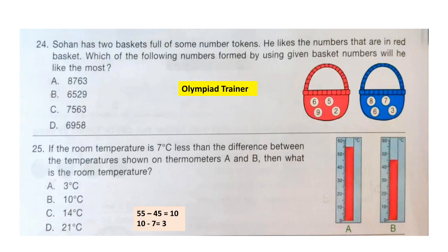Question 24: Sohan has two baskets full of some number tokens. He likes the numbers that are in the red basket. Which of the following numbers formed by using the given basket numbers will he like the most? It is said that Sohan likes red basket numbers, that is 6592. Among the options, option B is 6529, and all four digits are present in the red basket. So the correct answer is option B.